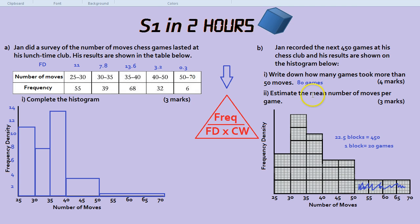Now, next question. Estimate the mean number of moves per game. Now, if this was a table instead of a histogram, you'd say, oh, that's easy. Any time it's estimated the mean, you just get the midpoint times the frequency. Midpoint times frequency. And that's exactly what you do on here.